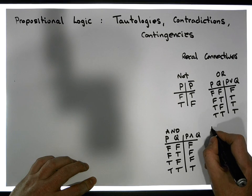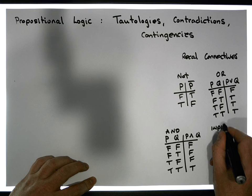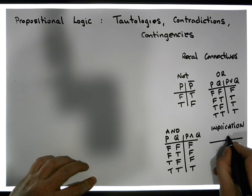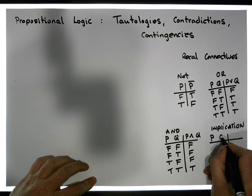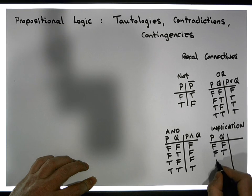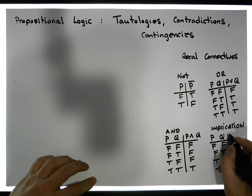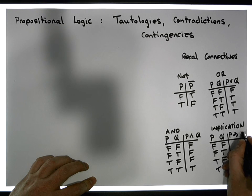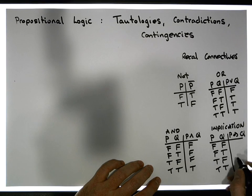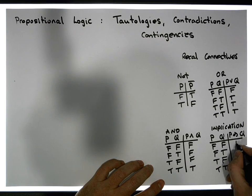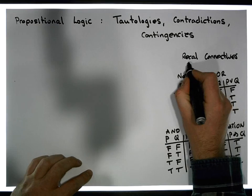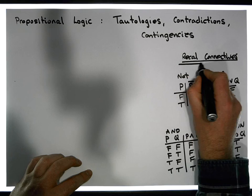Finally, we have the implication connective. It takes in two propositions, p and q. The truth values are: false implies false = true, false implies true = true, true implies false = false, true implies true = true. P implies q is only ever false when the premise is true and the conclusion is false. Everywhere else it's true. So let's keep these connectives in mind.